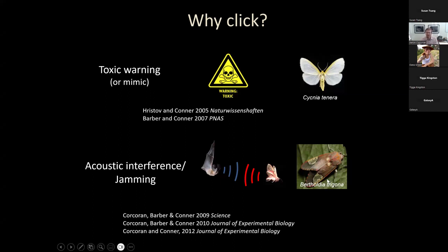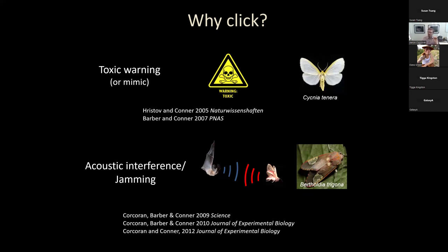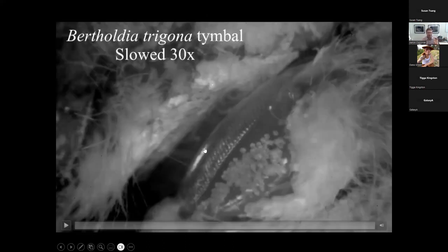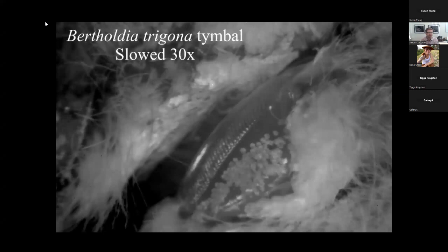This is where it's helpful to know that not all moth clicks are the same. We found this moth, Bertholdia trigona — it's a gorgeous little moth with slightly transparent wings and orange and pink hues. They're found in Central America, in Mexico, and a few places in the United States. We went down to Arizona to a field station where we figured out we could find these moths. We're so interested in them because they are champion sound producers — this is their timbal organ. Now this does have sound, so let me try to share sound.